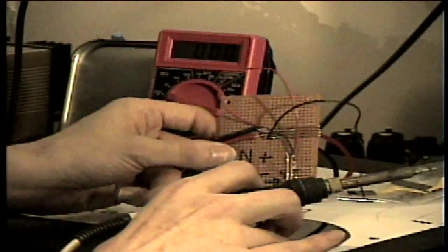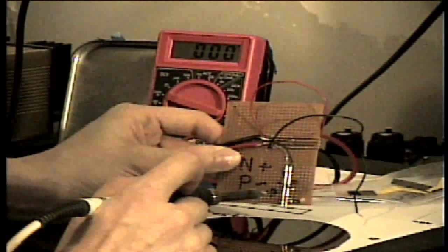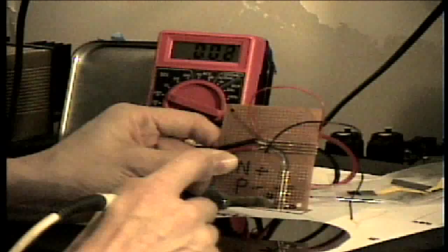Oh, is the soldering iron on? Oh, it is on. Sorry, I have it backwards. What we should see is the meter should swing in the positive direction for this wafer.